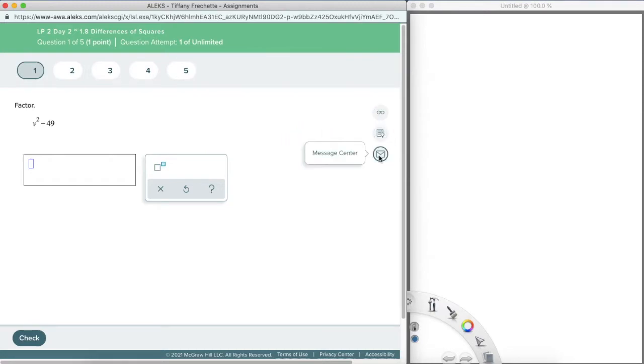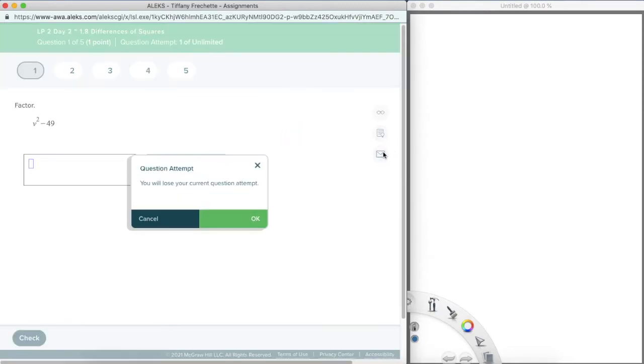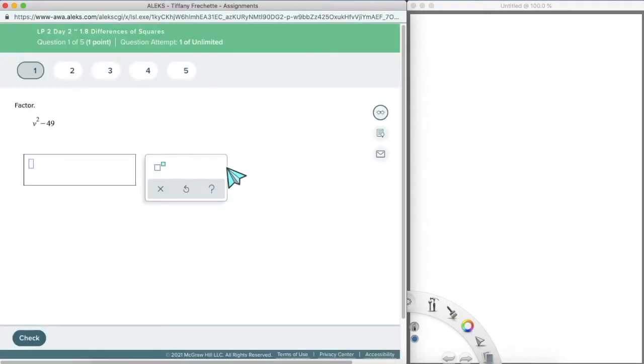There are three tools on the side here. The first one is explanation, and it's telling us we are going to lose our question attempt here if I click OK. And the reason for that is it's going to give me the explanation for this exact problem. So you'll get a little red X here, and you'll have to click submit assignment, and you can try again or quick retake, and it'll give you another example here, or another problem so that you can try it.